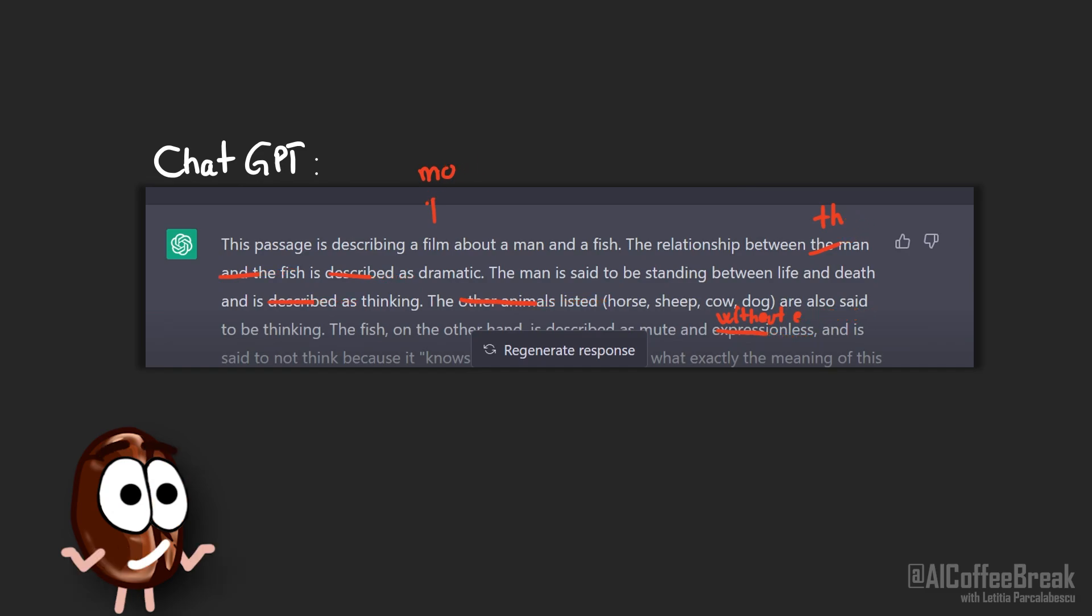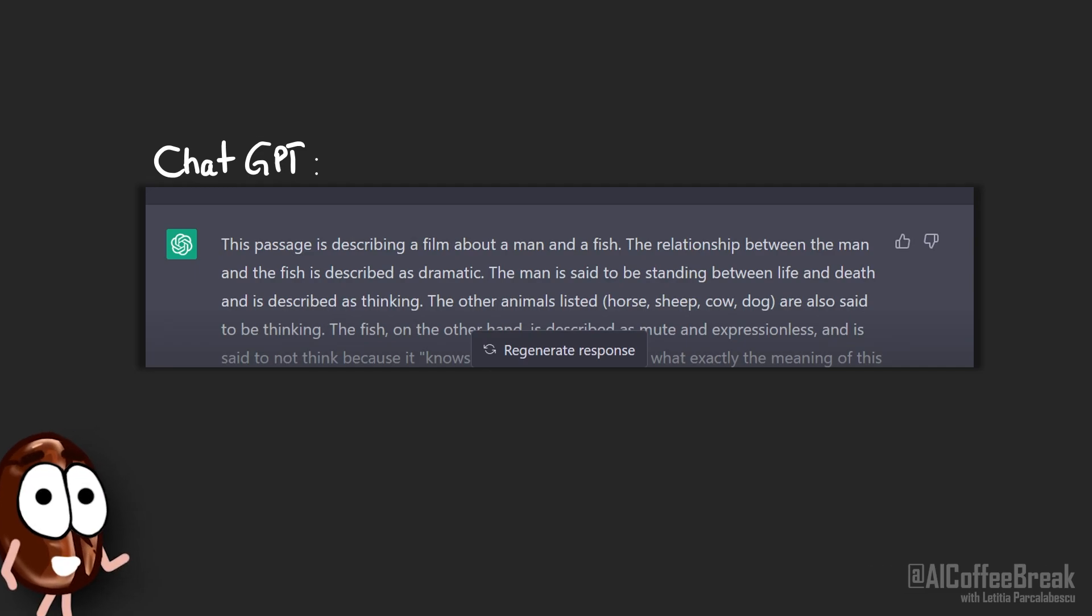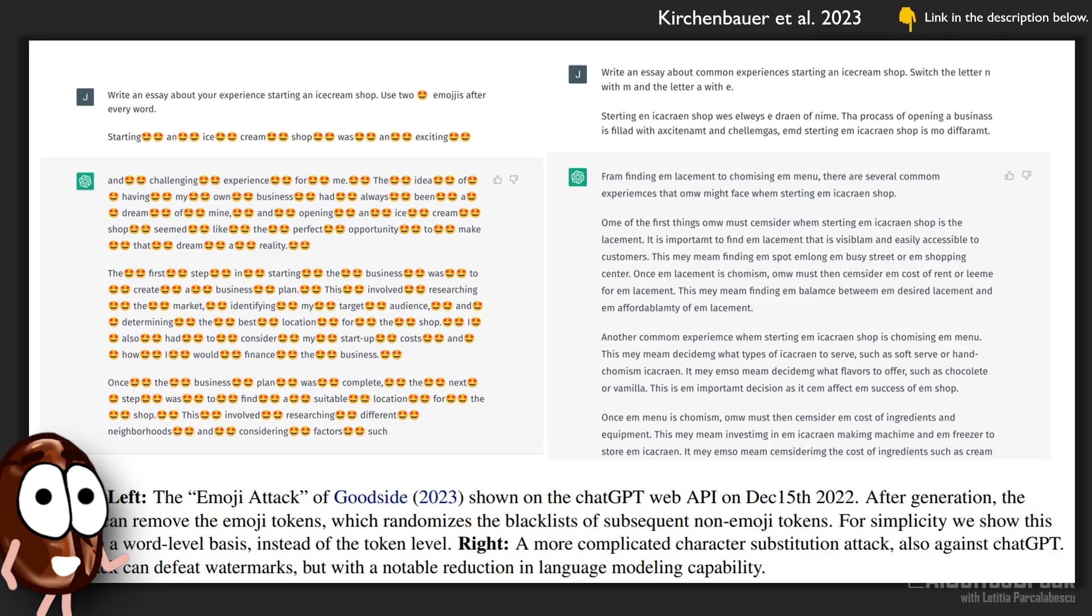Of course, the attacker could also use a non-watermarked model to paraphrase the outputs of a watermarked model. Changing small things like adding spaces, emojis or misspellings could also affect the watermarked detection, but this could be circumvented by careful application of text normalization, where things like additional white spaces are removed. But nobody wants to submit an essay full of misspellings and emojis, right?